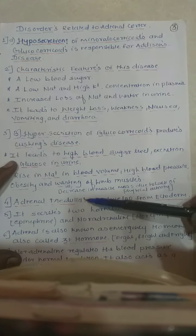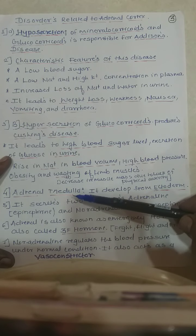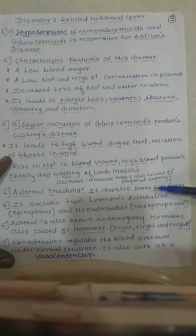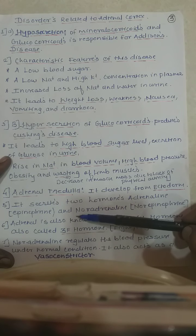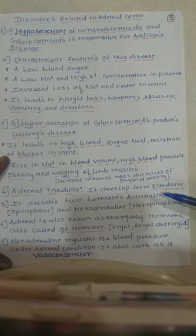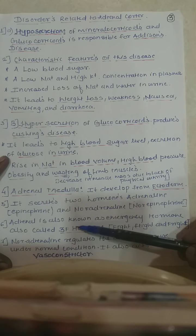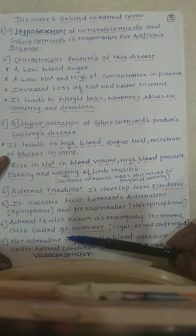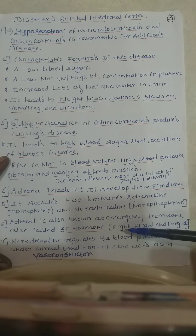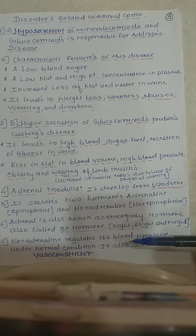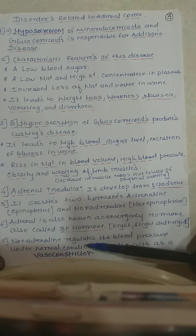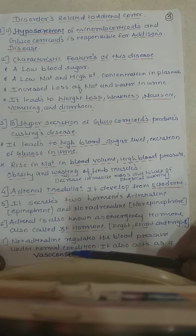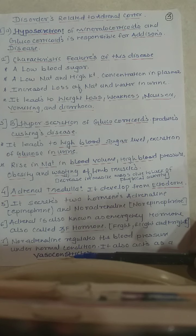The adrenal medulla is the middle part of the adrenal gland. It develops from the ectoderm and secretes two hormones: adrenaline, also known as epinephrine, and noradrenaline, also known as norepinephrine. Adrenaline is also known as the emergency hormone or 3F hormone — for fight, flight, and fright, when we are in a danger zone. Noradrenaline regulates blood pressure under normal conditions and acts as a vasoconstrictor, causing contraction of blood vessels.